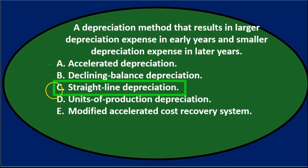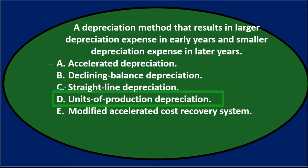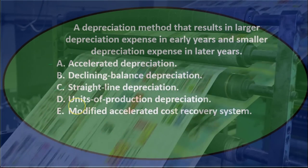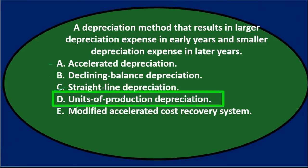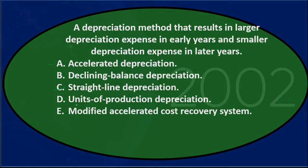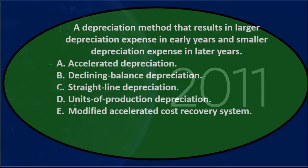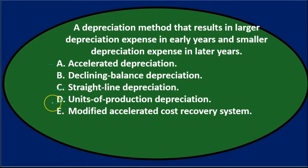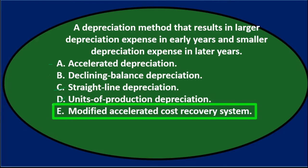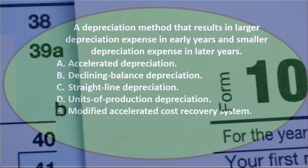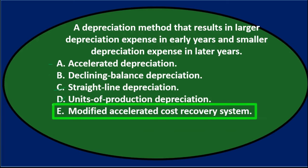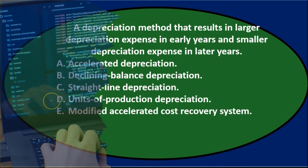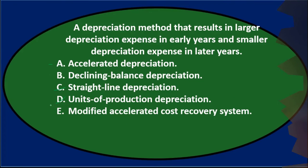C. Straight line method — not that one; it's going to be even across all periods. D. Units of production depreciation — that will depend on the units produced. If we produce more in the current year it might result in higher depreciation in earlier years, but that's not necessarily the case — it just depends how many units we produce. E. Modified accelerated cost recovery system — again, that's a tax code method and probably not the answer in financial accounting, though it is a form of accelerated method as well.